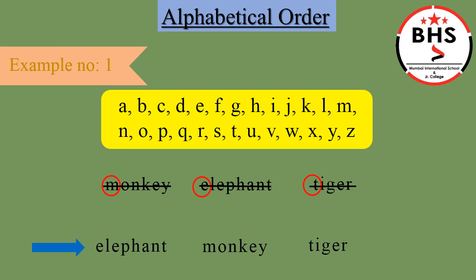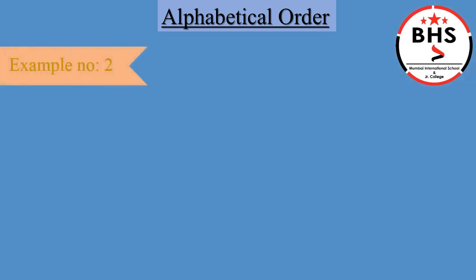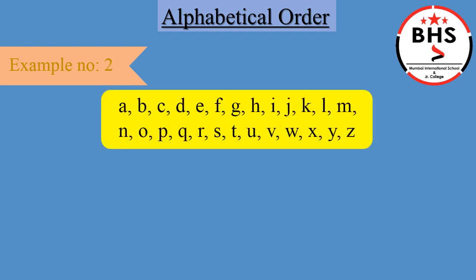We have arranged these words alphabetically. Let's go further. Example Number 2. Let's start. Truck, bread, lemon. Children, again we have to look at the first letter of each word. The first letter of truck is T. The first letter of bread is B. The first letter of lemon is L.